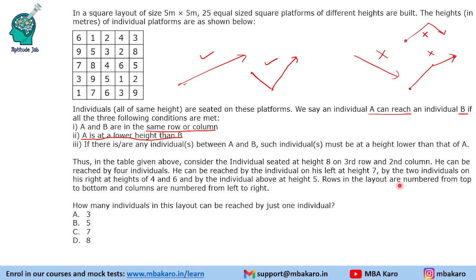Rows in the layout are numbered from top to bottom and columns are numbered from left to right. Now let us solve the questions.